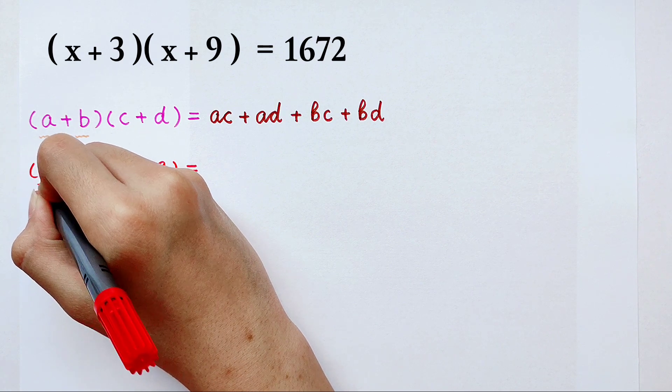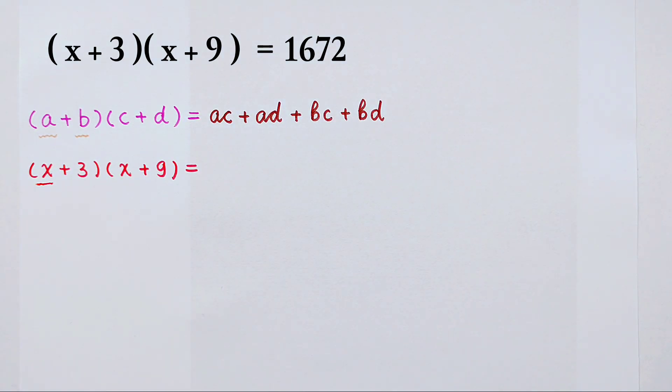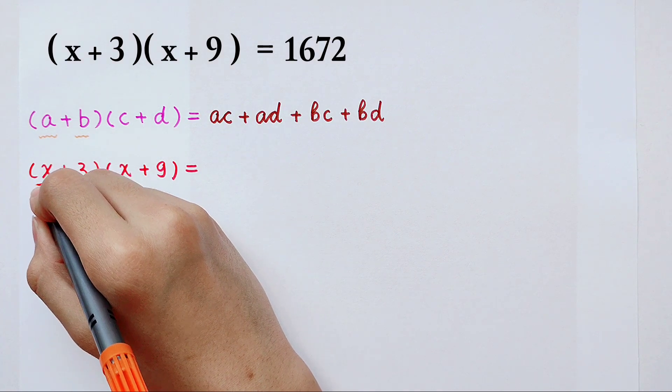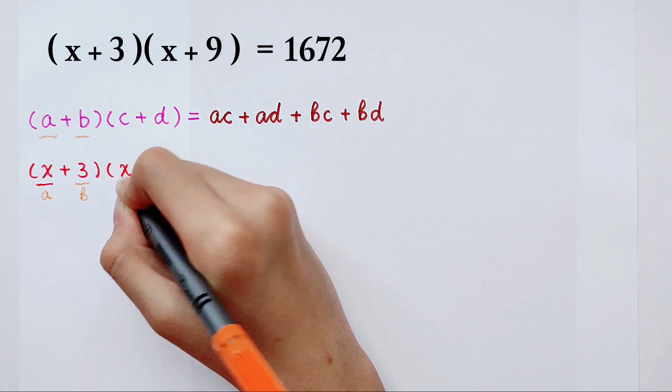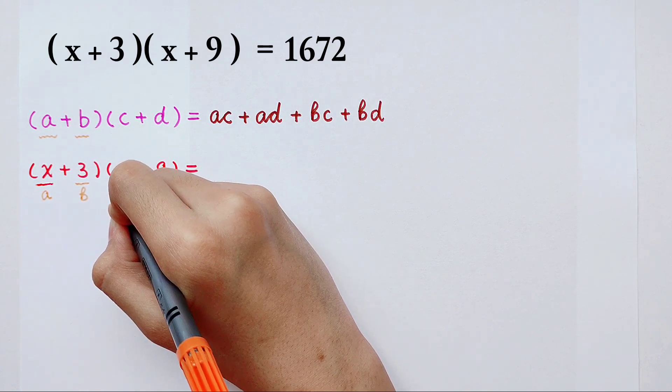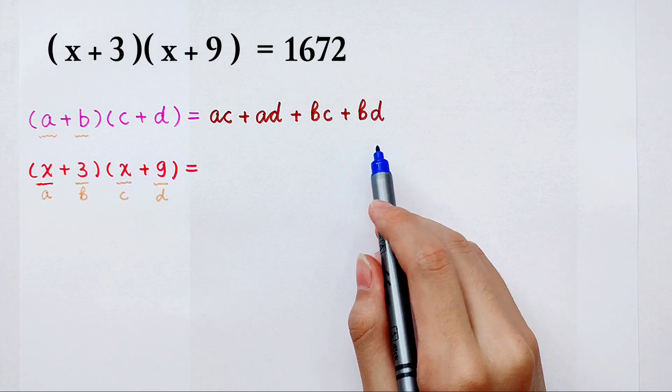This x, I used the wrong, yeah? I should use the orange one. So x is a and here 3 is b. And here the other x is c. This is d. So it's just like this formula.